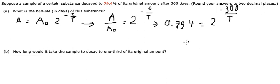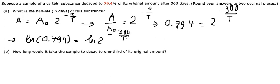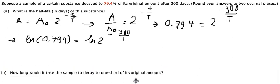Dividing, we will have 0.794 equal to 2 to the power of negative 300 over capital T. Now we can use natural log for both sides.